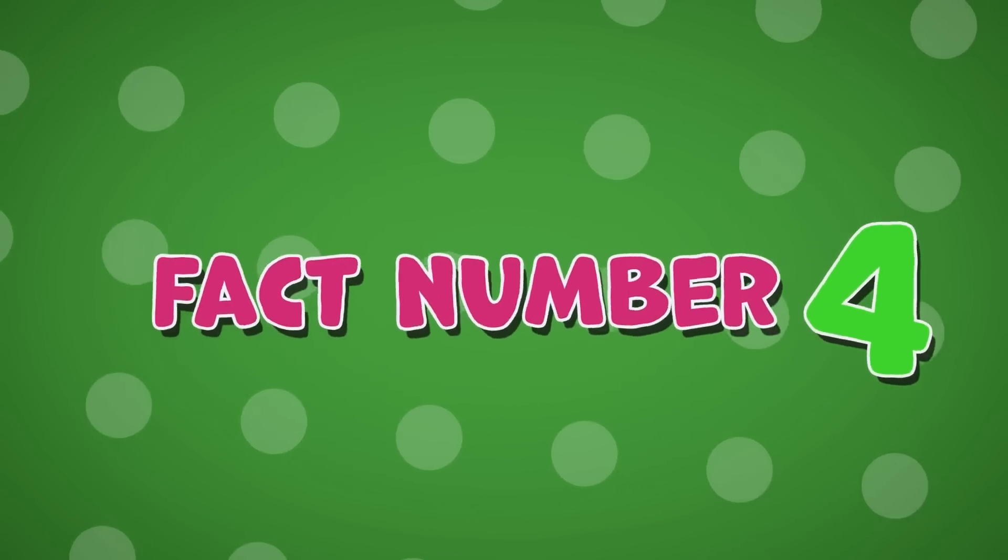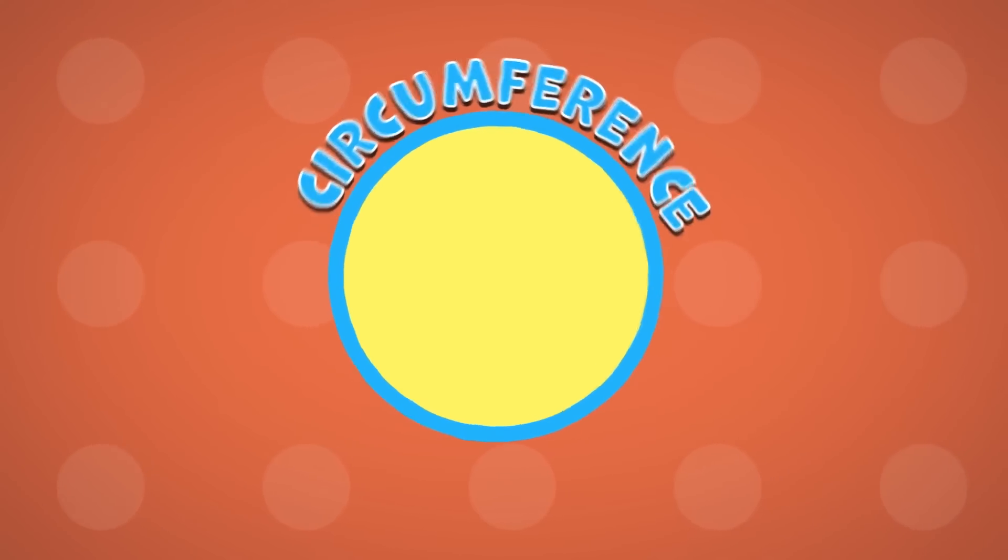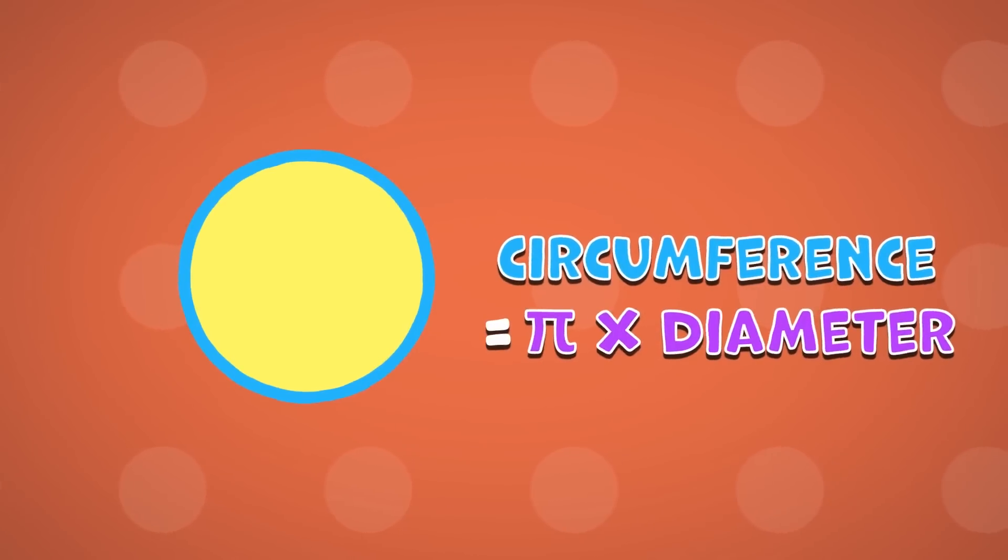Fact number four: The distance around the edge of a circle is called the circumference. This can be measured by using this formula: pi times diameter of the circle.